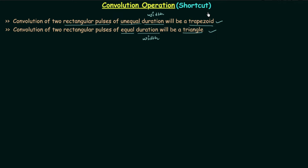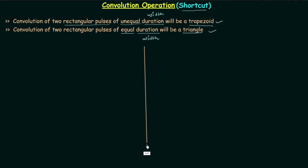In this shortcut method there is no convolution operation involved — we will obtain the result of convolution without performing any convolution. That's why I am calling it a shortcut method, and it is only applicable when you are performing the convolution of two rectangular pulses. If the pulses are not rectangular you cannot use the shortcut method.